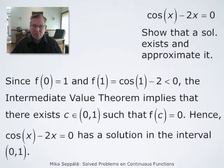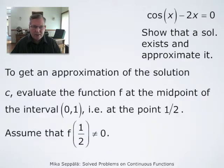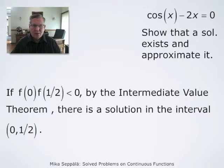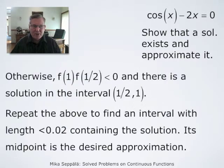Now our task is to approximate the solution. We know the solution is between 0 and 1, so our first approximation is the midpoint. We evaluate f at the midpoint. If it is 0, we found the solution. If not, it is either positive or negative. We check the product f(0)·f(0.5): if negative, f(0) and f(0.5) have different signs, and by IVT there is a solution between 0 and 0.5. In this case, f(1)·f(0.5) is positive, so the solution is between 0 and 0.5.